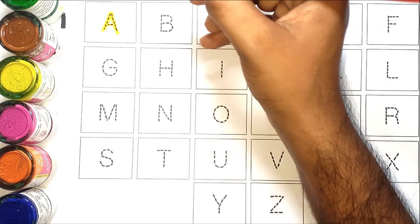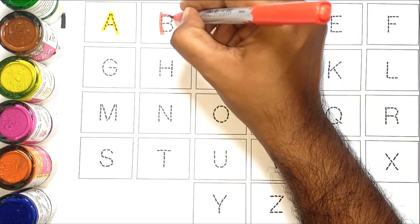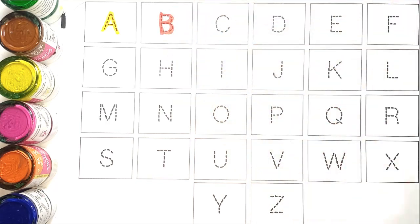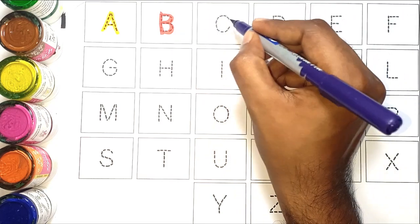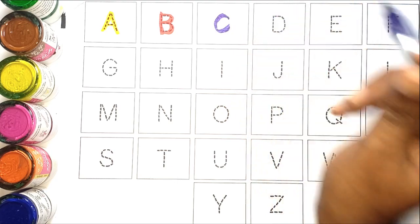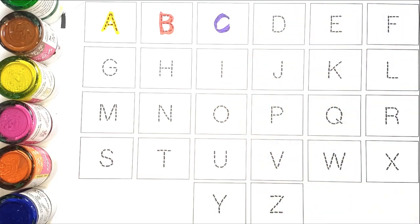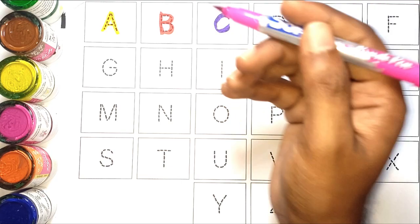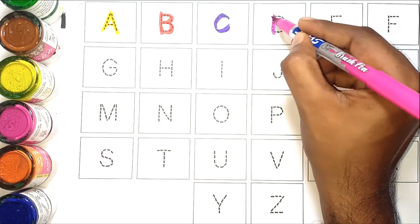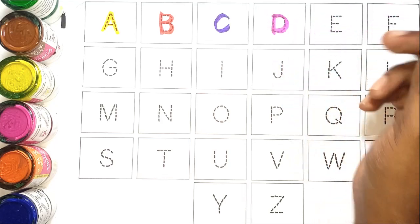Red color B, B for banana. Blue color C, C for cherry. Pink color D, D for dog.